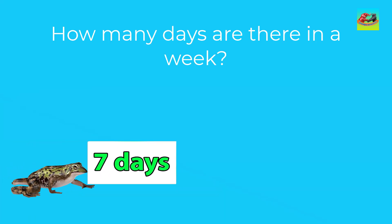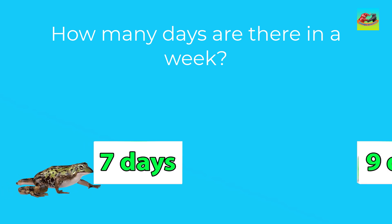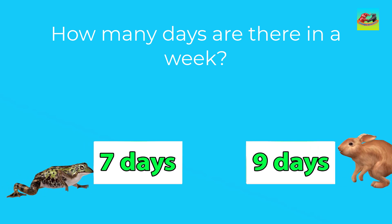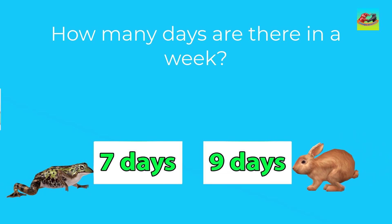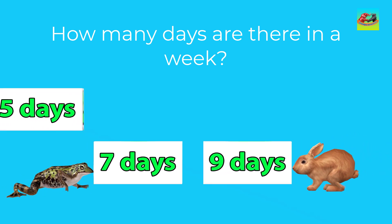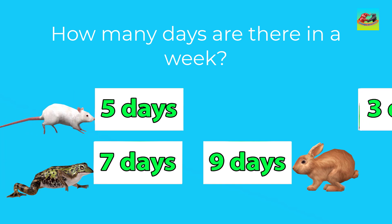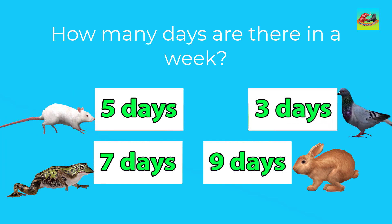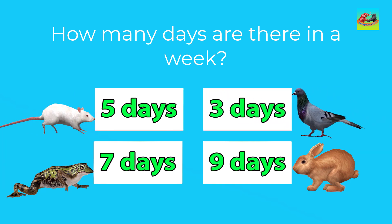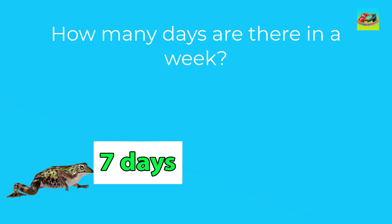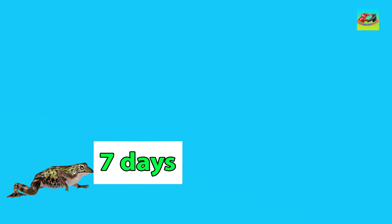How many days are there in a week? The correct answer is seven days. There are seven days in a week.